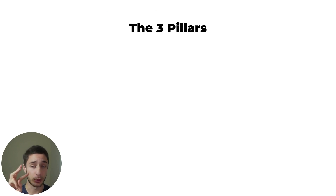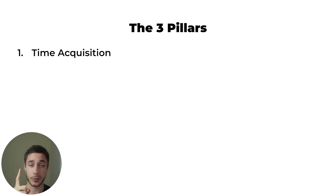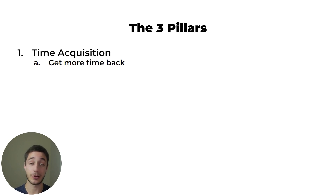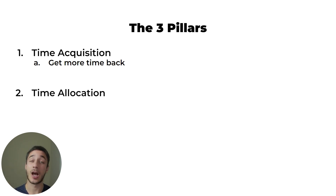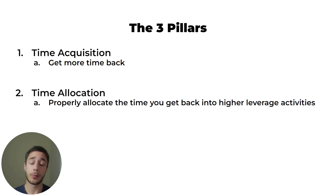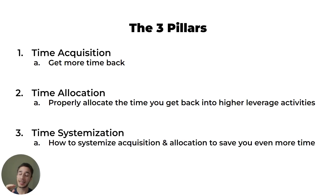Let's get straight into it and talk about what the three pillars actually are. First pillar: time acquisition — how to get your time back, how to get more time to actually spend on what you need. The second pillar: time allocation — how to properly allocate the time you got back into higher leverage activities. And last but not least: time systemization — to help you systemize acquisition and allocation to save you even more time in the long run.